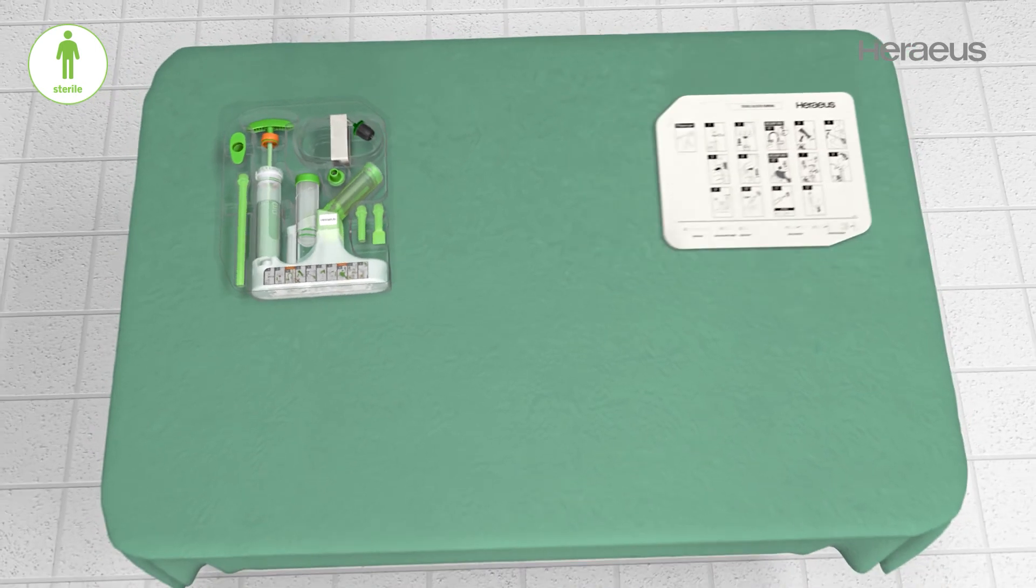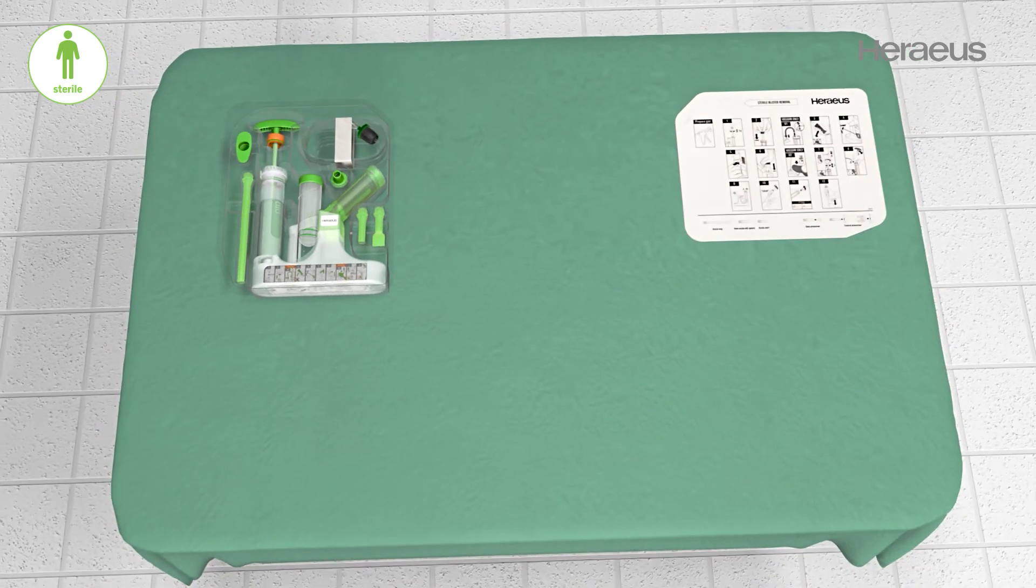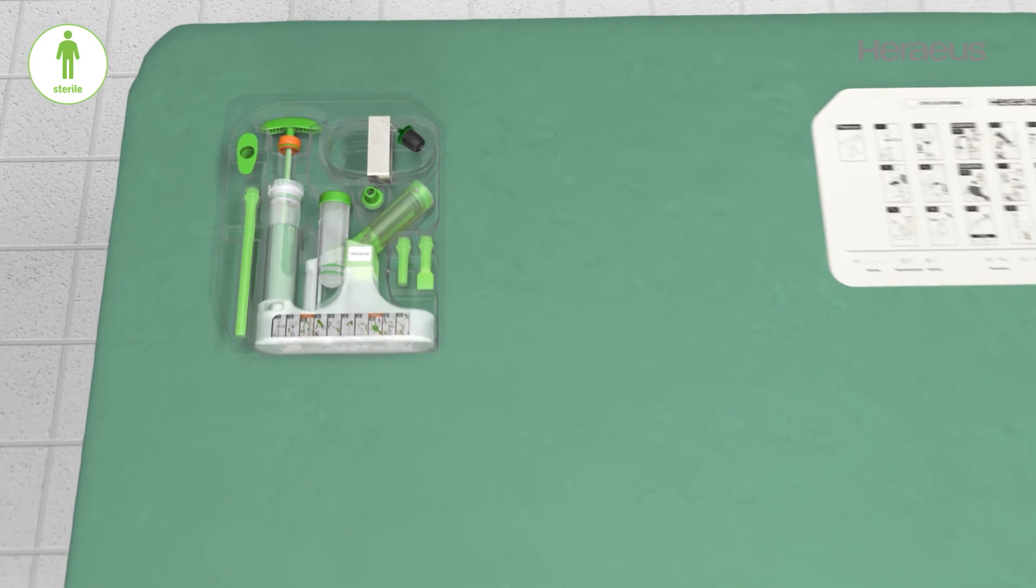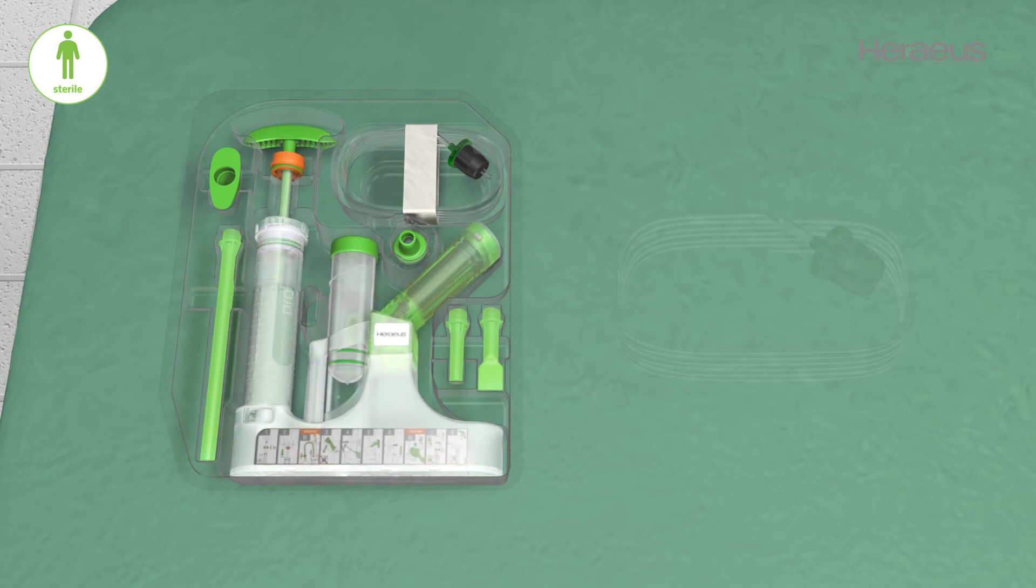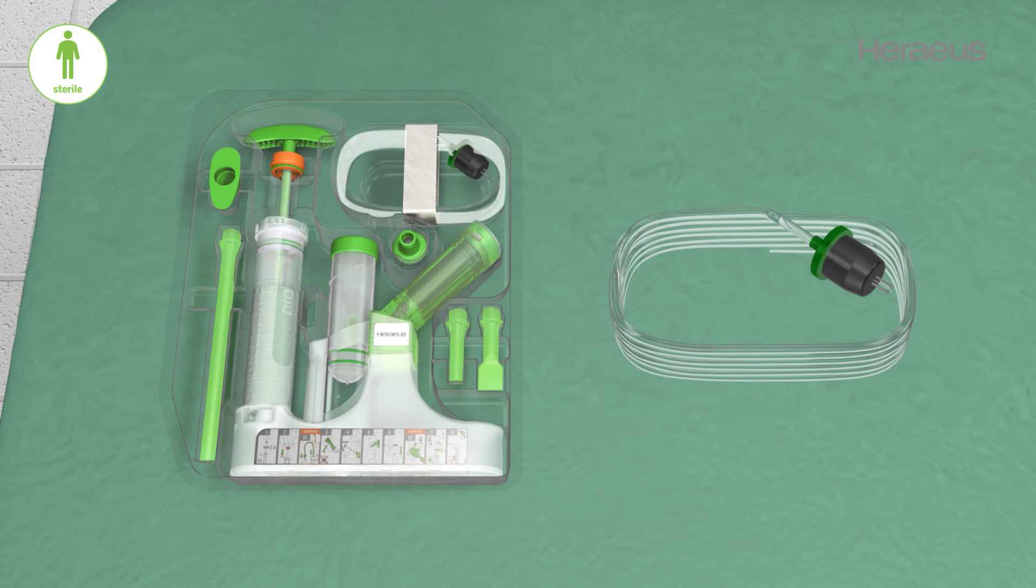The blister is opened and the Tyvek with step-by-step instructions for use is placed on the sterile table. The Pelikos Pro system includes the pre-filled mixing system and a vacuum hose for mixing under vacuum.